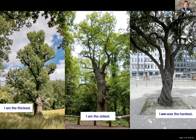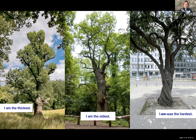Trees are a very emotional topic in Berlin. We have trees that are even monuments — protected by the city. To the left you see an oak tree that's 7.7 meters in circumference; in the middle, the oldest tree said to be more than 800 years old; and to the right, a cherry tree that was considered the hardiest — but ironically it was broken down by a storm at the beginning of the year.